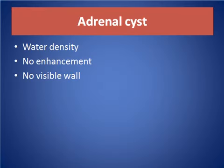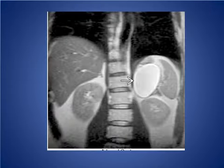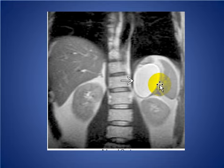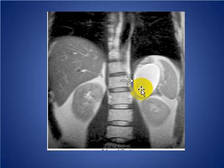Adrenal cyst: water density, no enhancement, no visible wall, no mural nodule. We have coronal T2-weighted MRI images showing a large cyst in the left adrenal gland, consistent with an adrenal cyst.